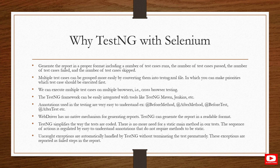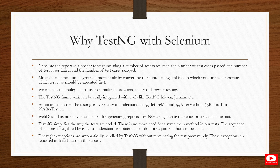The annotations used in TestNG are very easy to understand because they overcome JUnit limitations. In JUnit we have annotations called 'before' and 'after' which don't give much information, but TestNG provides 'before method,' 'after method,' 'before test,' 'after test,' which clearly convey their purpose. Selenium WebDriver has no native mechanism for generating reports, so it relies on third-party reporting formats like TestNG reports.